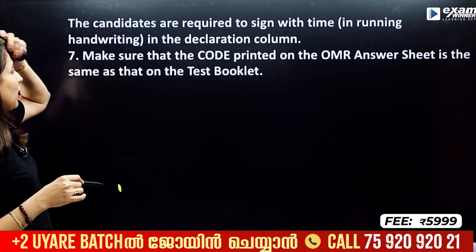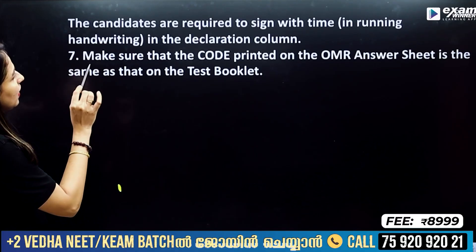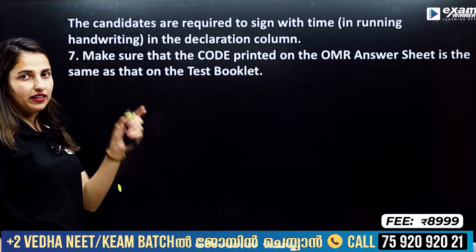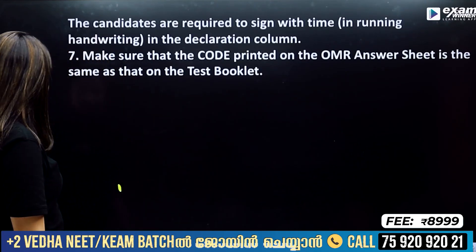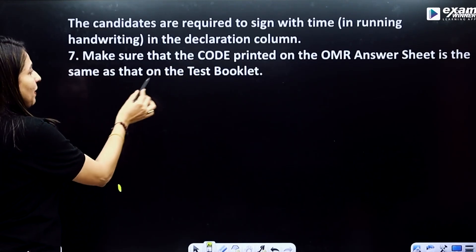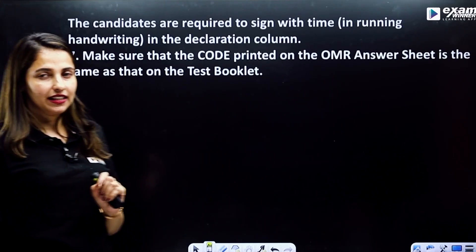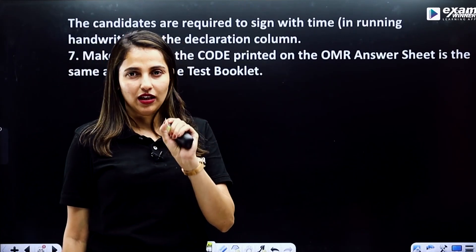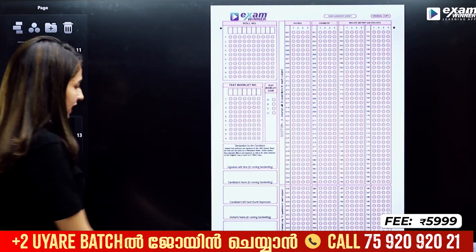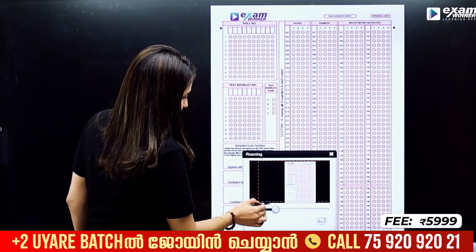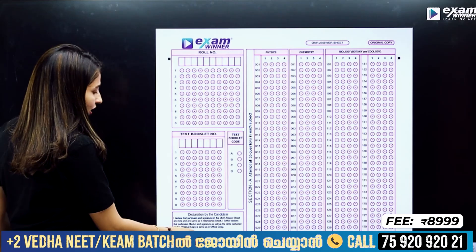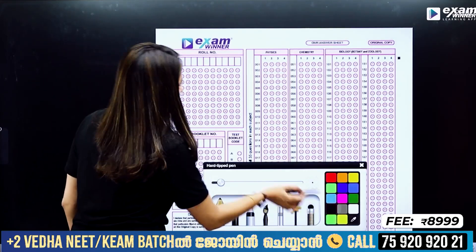The candidate is required to sign with time. You need to make a declaration in handwriting. Make sure that the code printed on the OMR sheet is the same as that on the test booklet. If you want to fill the OMR sheet, you need to have the same code. A sample of the OMR sheet is shown here. You will need to fill in the roll number.